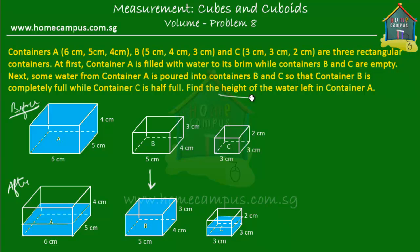We have to find out the height of the water left in container A. One thing that did not change was the total quantity, or the total volume, of water. How much was the total volume of water at first? At first, B and C were empty — there was water only in container A. So if we can find out the capacity or the maximum volume of container A, then we'll know how much water was there at first, and the same amount of water is present later as well.